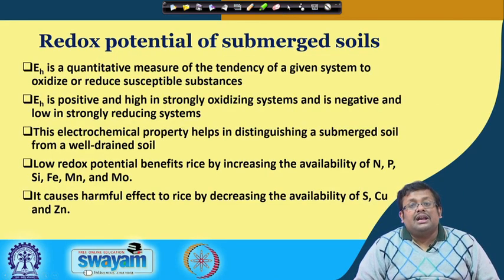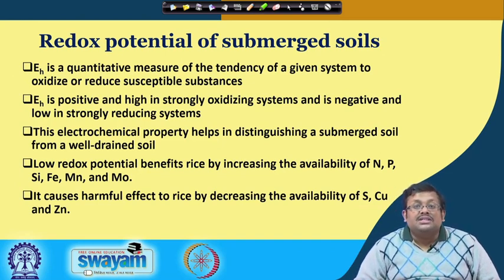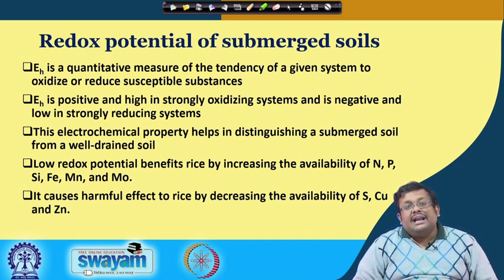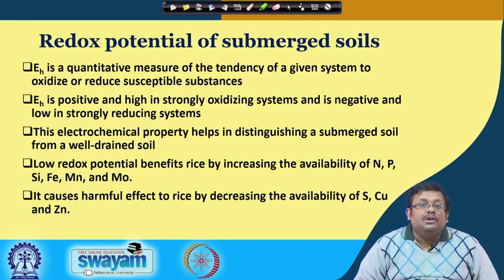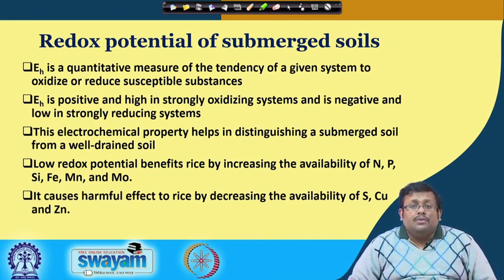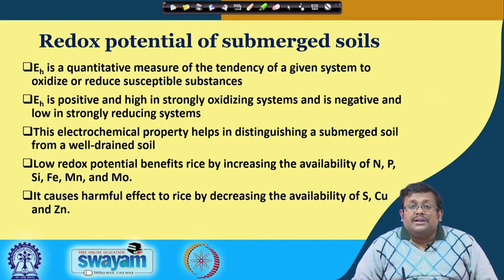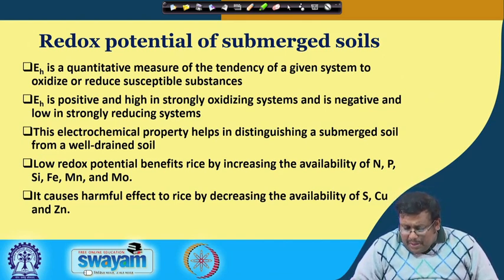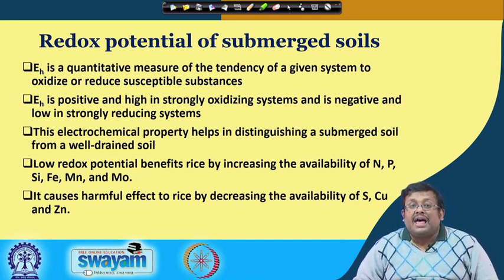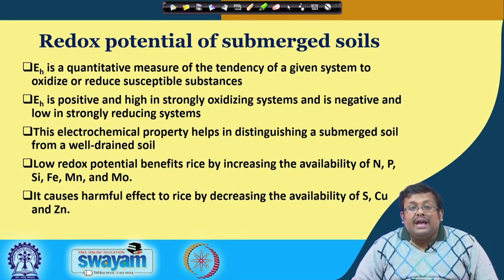Redox potential has important implications for submerged soils. Eh is a quantitative measure of the tendency of a system to oxidize or reduce susceptible substances, and helps distinguish submerged soils from well-drained soils. Regarding plant nutrition, low redox potential (submerged condition) is beneficial for rice by increasing the availability of nitrogen, phosphorus, silicon, iron, manganese, and molybdenum.